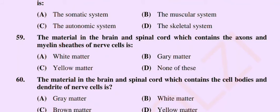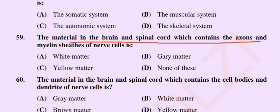Question number 59: The material in the brain and spinal cord which contains the axons and myelinated sheath of nerve cells is — option A: white matter, option B: grey matter, option C: yellow matter, option D: none of these. The correct option is option A: white matter.